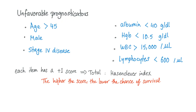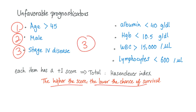Unfavorable prognostic factors — if you see one of these, you have a worse prognosis, and the more you have, the worse the prognosis. These include age greater than 45, male gender, stage 4 disease, albumin less than 40, hemoglobin less than 10.5, white blood cells greater than 15,000, and lymphocytes less than 600. Each item has one score — you add them up. The higher the score, the lower the chance of survival. This is called the Hasenclever Index.